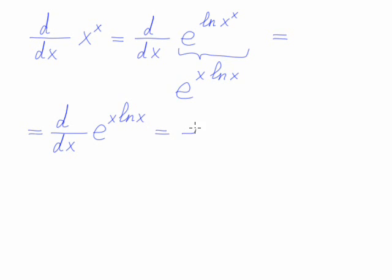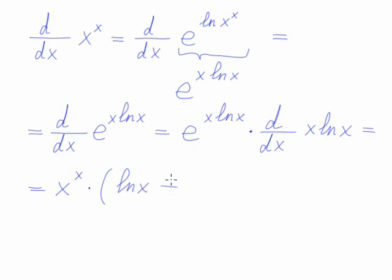We have e to the x ln x times the internal function, so the derivative of x ln x. This equals x to the power of x times ln x plus x times 1 over x.